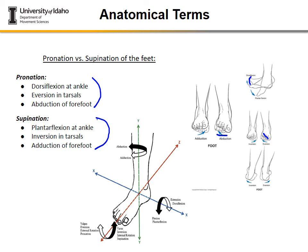Supination also involves inversion of the tarsals and adduction of the foot. The illustration uses x, y, and z axes — note that in this diagram z is not going up vertically but represents the anterior-posterior axis. Understanding your frame of reference is essential when interpreting what axis the motion occurs about.